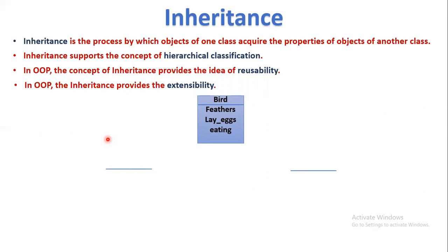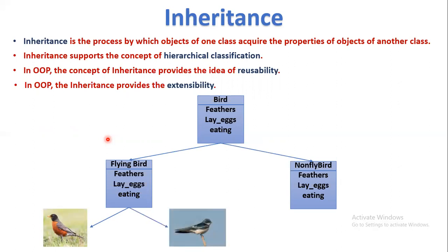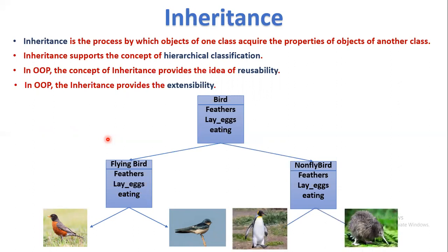Here is a diagrammatic representation of inheritance for hierarchical classification. We have a Bird class with some properties. From that Bird class we define two subclasses: Flying Bird and Non-Flying Bird. From the Flying Bird class we further classify into Robin and Sparrow. For Non-Flying Birds, we have Penguin and Kiwi. This is the hierarchical classification of inheritance.